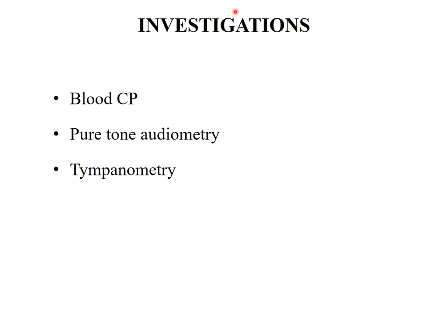Investigations include: blood CBC to look for any infection; pure tone audiometry to show the type of hearing loss; and tympanometry to show pressure changes and mobility of the eardrum — the graph formed will be either type C or type B.